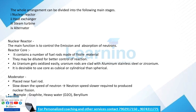The nuclear reactor's main function is the control, emission, and absorption of neutrons. The reactor core consists of a number of fuel rods made of fissile material. They may be diluted for better control of the reaction. The uranium is oxidized; uranium rods are clad with aluminum, stainless steel, or zirconium. It is desirable to use a core that is cubical or cylindrical in shape.